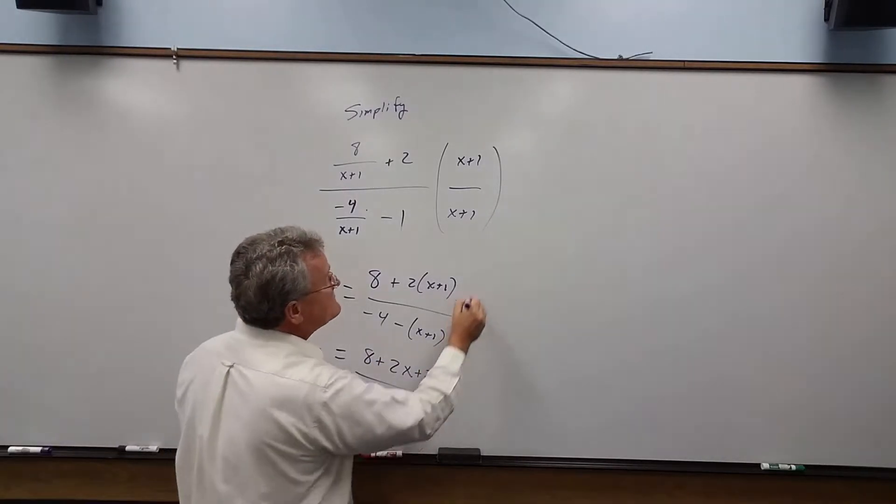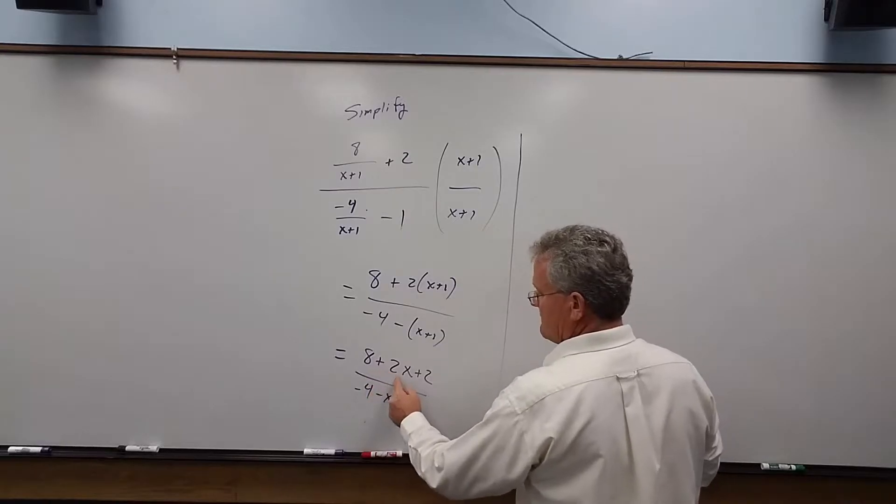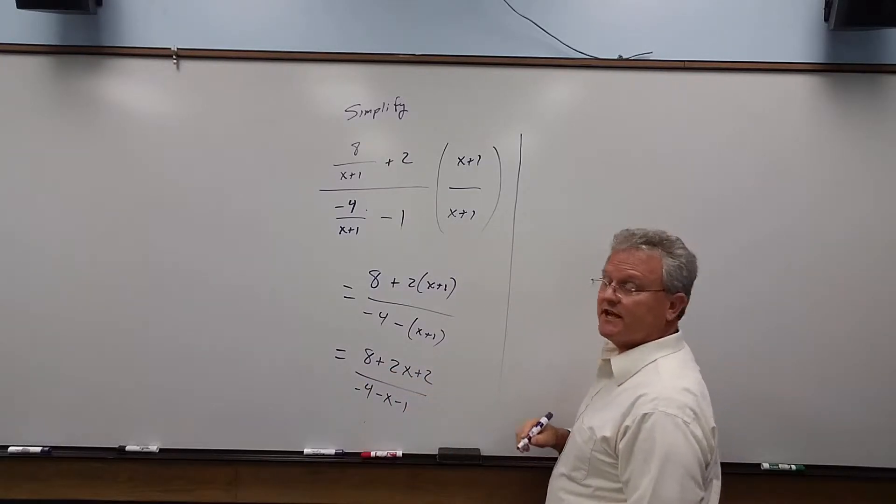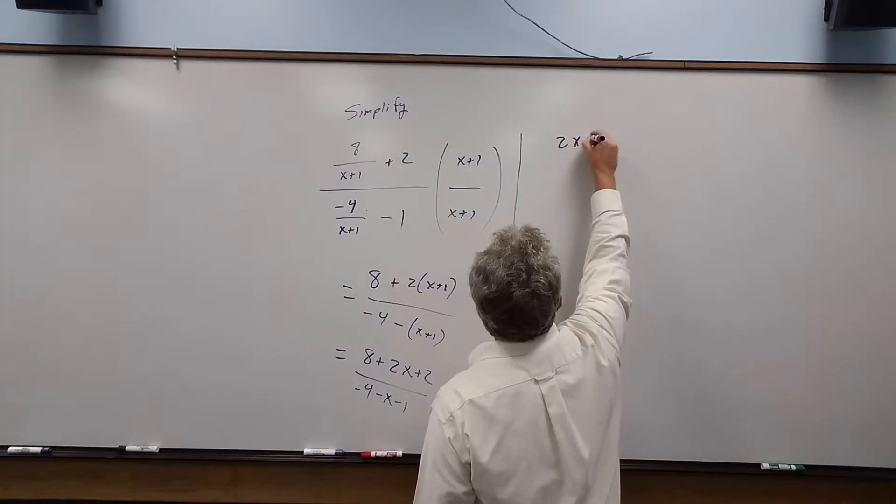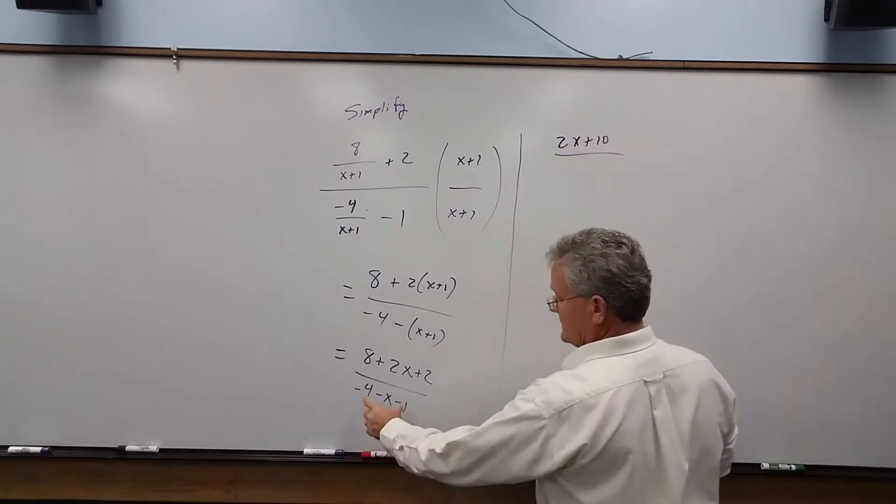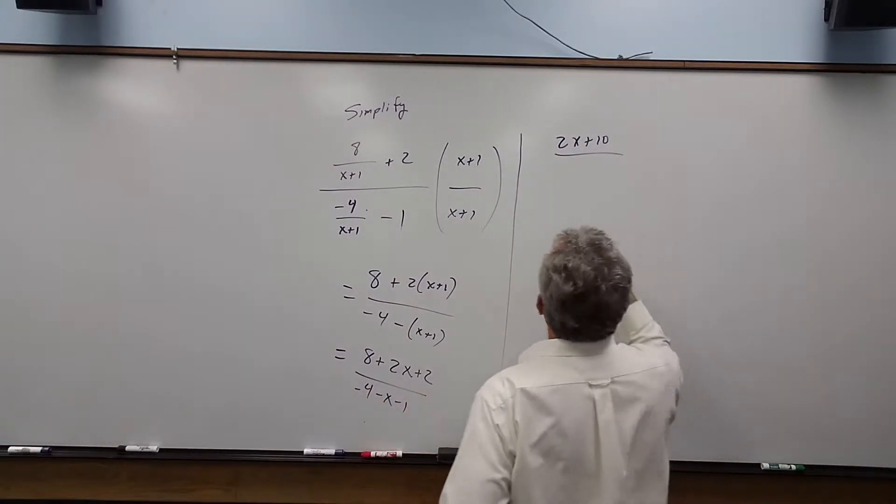Let's simplify further. Here we have 2x plus 10, and in the denominator we have minus x minus 5.